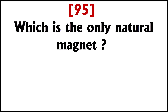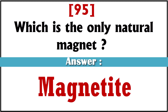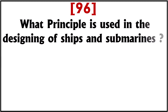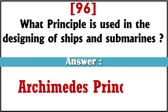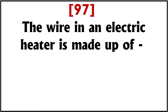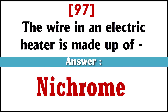Which is the only natural magnet? Answer: Magnetite. What principle is used in the designing of ships and submarines? Answer: Archimedes' principle. The wire in an electric heater is made up of? Answer: Nichrome.